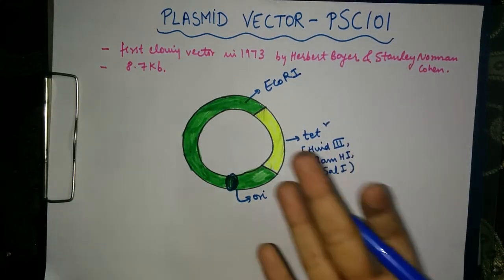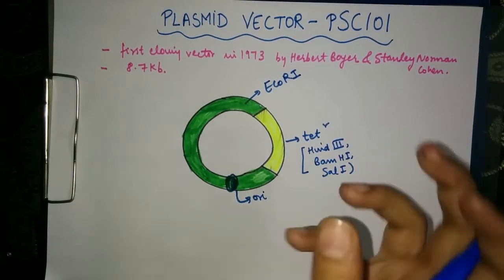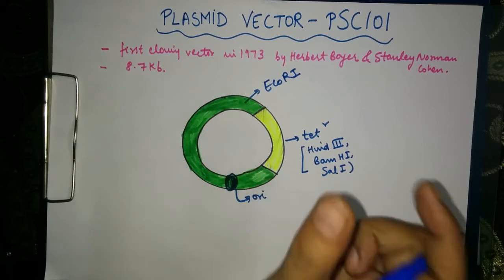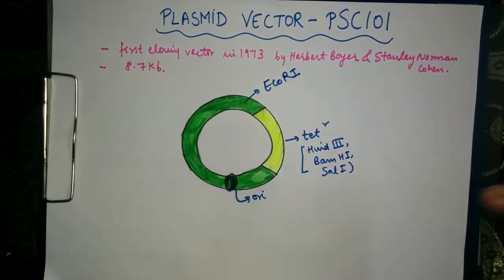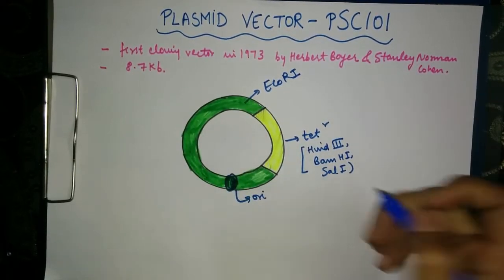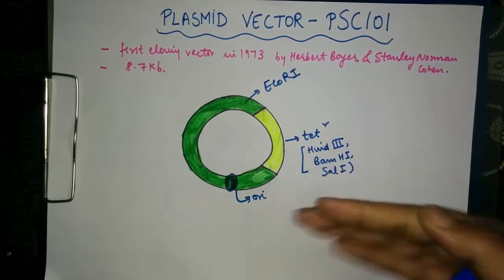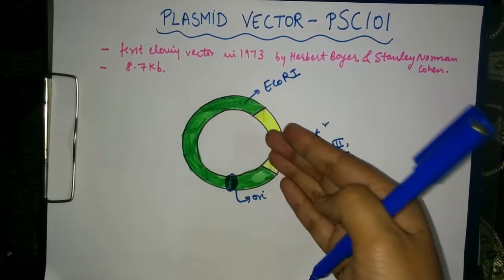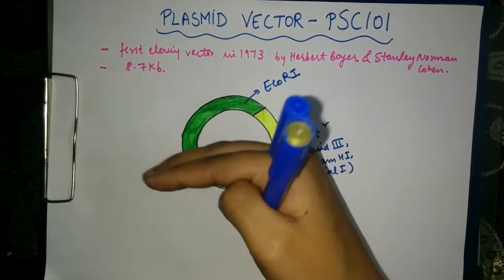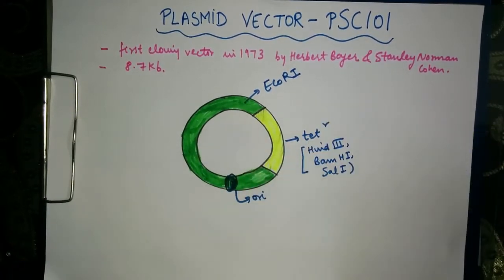A restriction endonuclease is a particular enzyme that recognizes a particular sequence on the DNA and makes a cut there. These cuts we will use to insert our DNA.